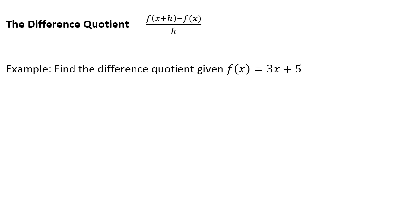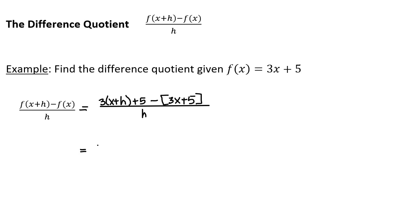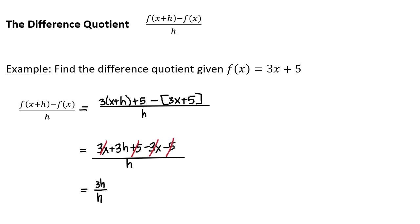In the example, find the difference quotient given f of x equals 3x plus 5. This equals 3(x plus h) plus 5 minus (3x plus 5), all over h. Expanding gives 3x plus 3h plus 5 minus 3x minus 5, all over h. The 3x terms cancel, the 5 terms cancel, leaving 3h divided by h, and h divided by h is 1, so the answer is 3.